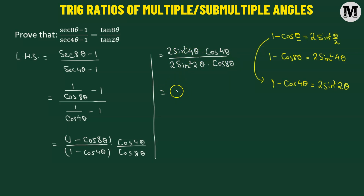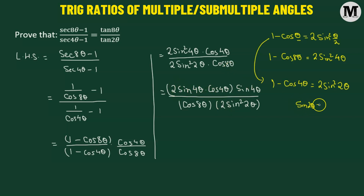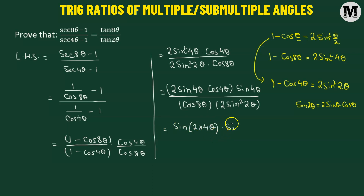Let's rewrite the numerator. We have 2 sine squared 4θ, but we'll consider one factor of sine 4θ separately. So we write it as 2 sine 4θ times cosine 4θ — treating that as one term — multiplied by that extra sine 4θ. The whole expression is divided by cosine 8θ times 2 sine squared 2θ. We recognize that 2 sine 4θ times cosine 4θ equals sine of 2 times 4θ, so this portion becomes sine 8θ times sine 4θ.